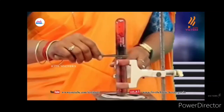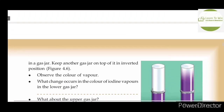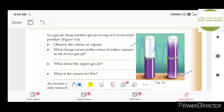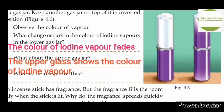In the first test tube and in the third test tube, you can observe the changes. If you have a textbook, you can read it there. Observe the color of vapor — it's purple color. The color of iodine vapor is in the lower gas jar. The color of iodine vapor fades, and the purple color is in the glass jar, showing the color of iodine vapor.